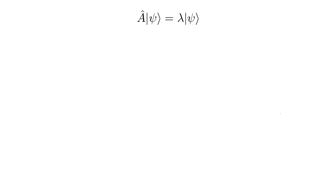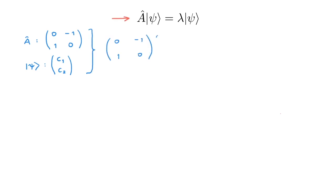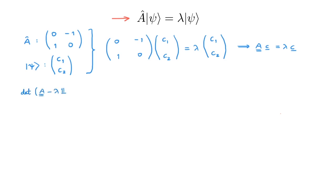In the matrix formulation of quantum mechanics, let's consider an operator A given by a specific matrix and the state psi given by a column vector. We want to find the eigenvalues and eigenvectors of the operator A. The eigenvalue equation can be written in the Dirac notation as shown, or also in the matrix formulation like this. We start by constructing the characteristic equation, write out the determinant explicitly, and then evaluate the determinant.